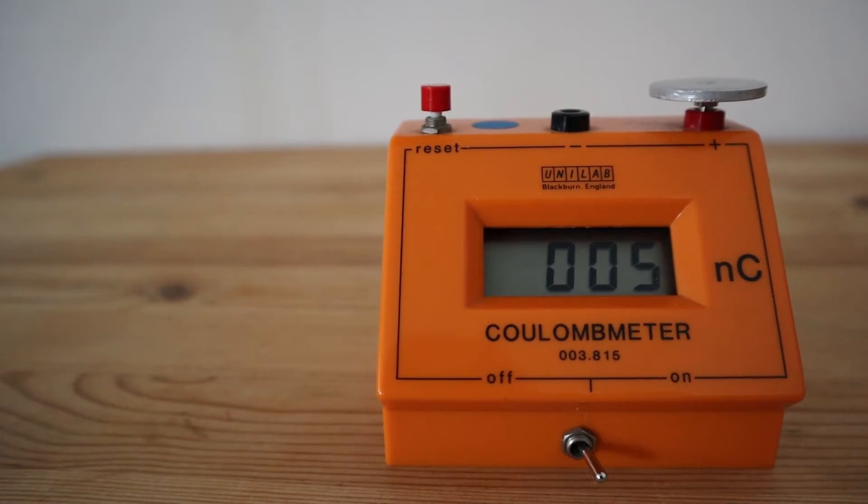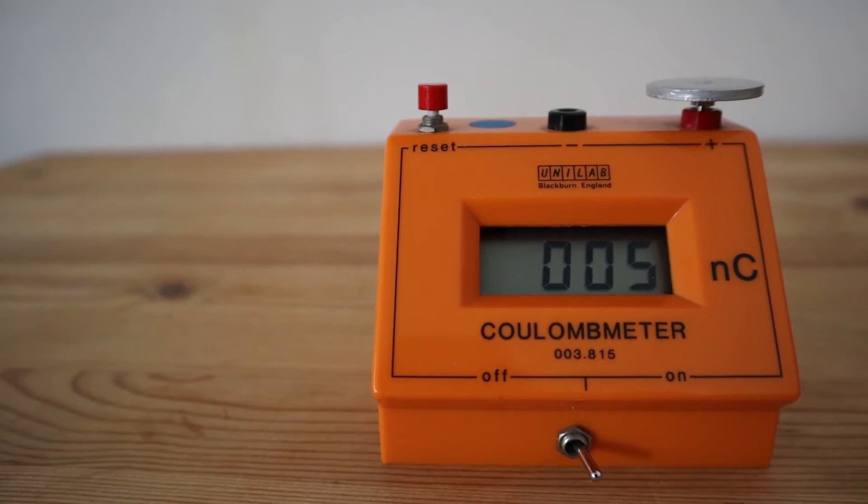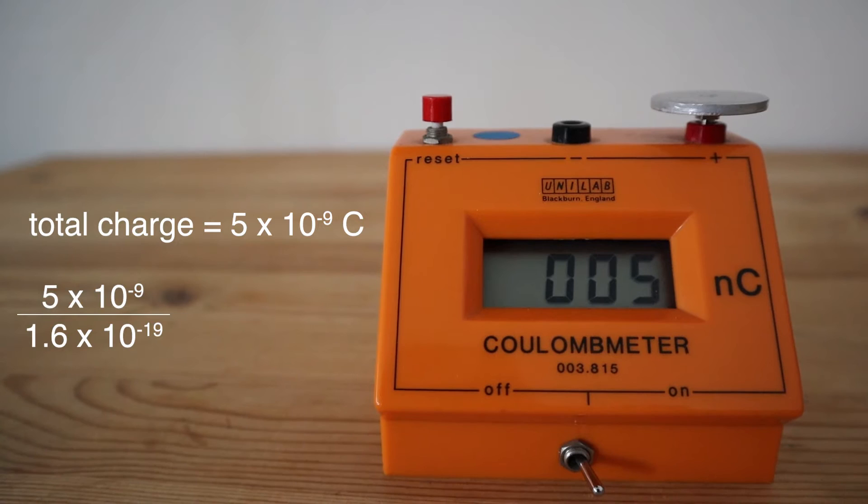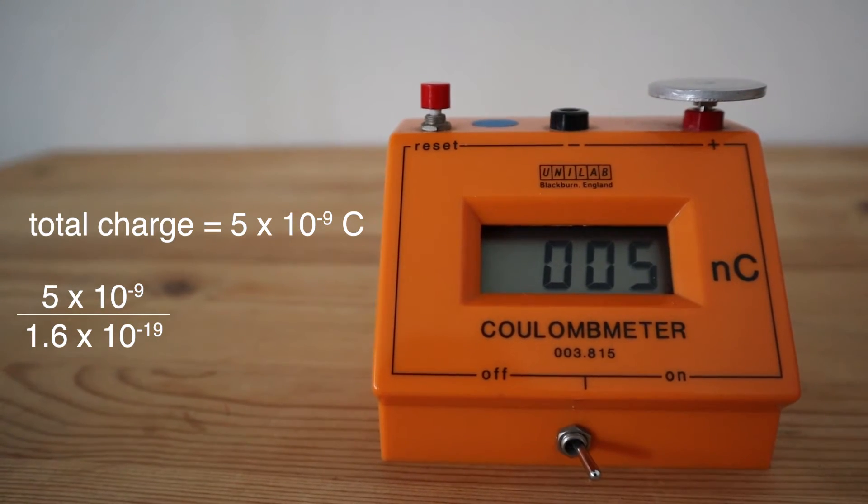To find out exactly how many electrons have been transferred from the balloon to the metal plate, we can take the total charge and divide it by the charge on one electron.